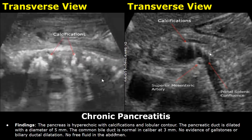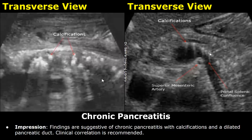After writing these statements, you can write about the CBD and comment on gallstones or biliary ductal dilation. At the end, you can write about free fluid in the abdomen. In the impression: findings are suggestive of chronic pancreatitis with calcifications and a dilated pancreatic duct. Clinical correlation is recommended.